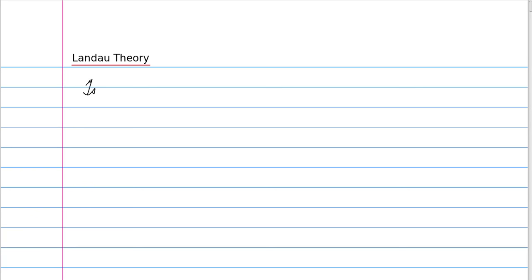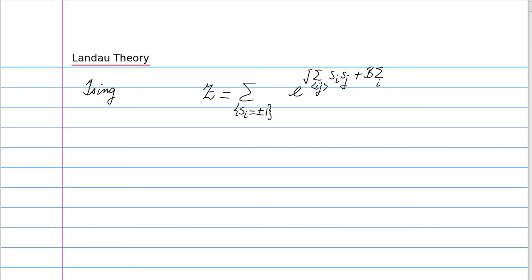To discuss the Landau theory in detail it's convenient to take its simplest form, which pertains to the Ising model — in fact a whole class of models in which there are only two phases. In the Ising model these are the two magnetic phases. The partition function is a sum over all possible spin configurations where each spin takes values plus or minus one, defined on a grid, with a Boltzmann factor containing the interaction. There is a nearest-neighbor interaction between spins S_i and S_j, indicated by angular brackets, and an extra interaction caused by an external field.